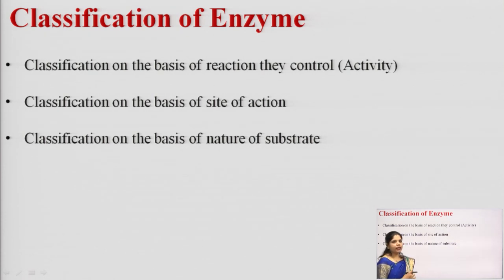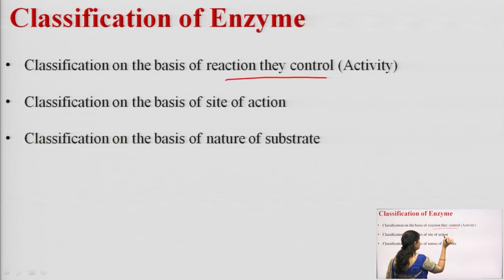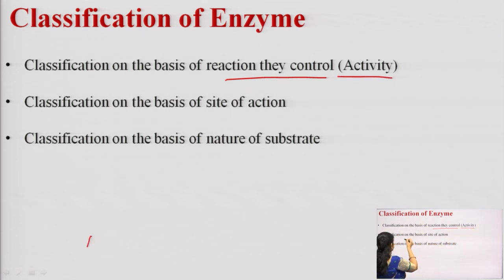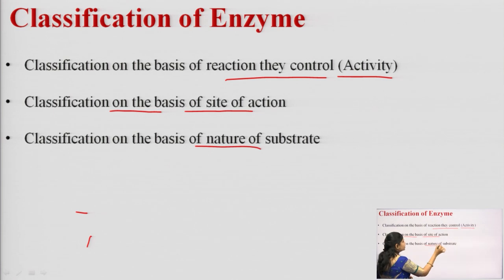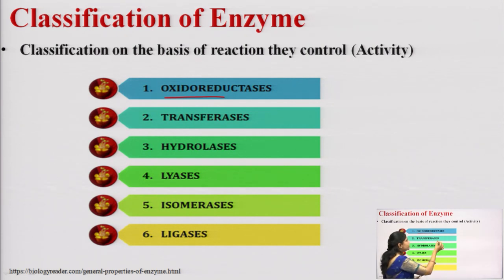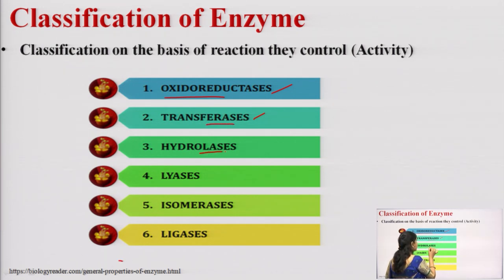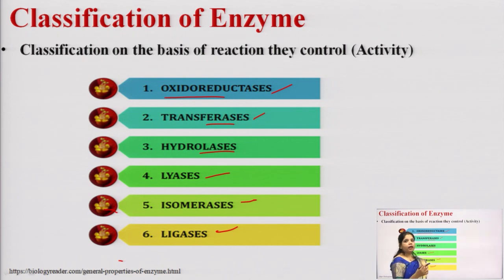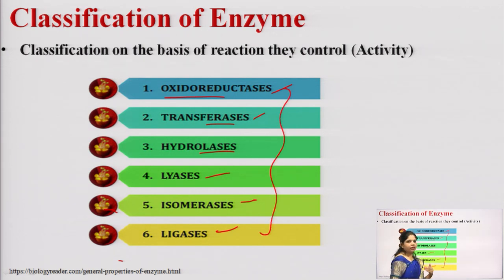Classification of enzymes falls into three categories. First, classification on the basis of reactions they control — including oxidoreductases, transferases, hydrolases, lyases, isomerases, and ligases. Different activities require different enzyme types. Second, classification on the basis of site of action — they are categorized into exoenzymes and endoenzymes. Endoenzymes act inside the cell, while exoenzymes act outside the cell.